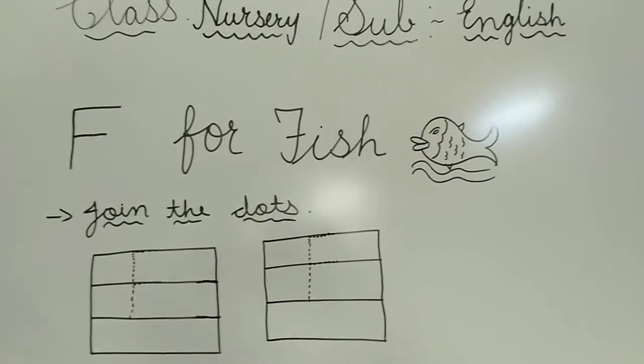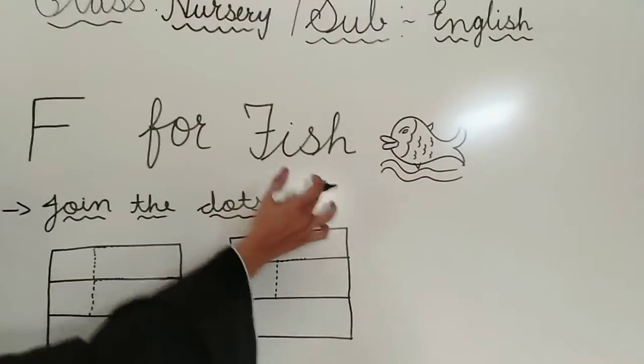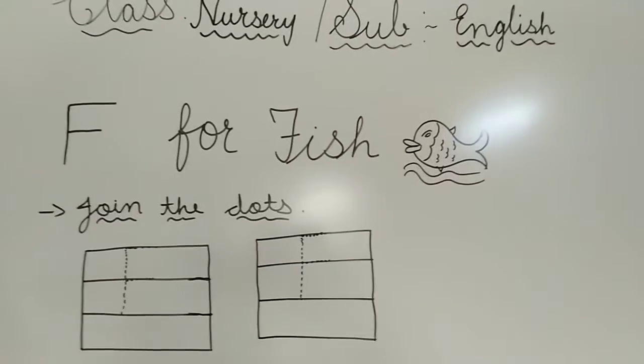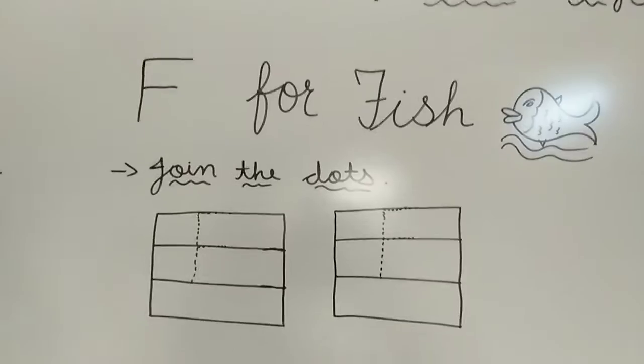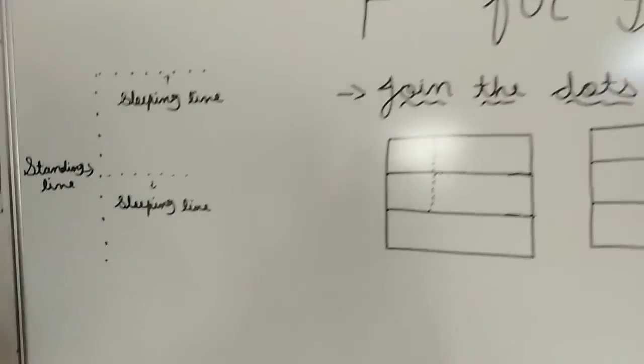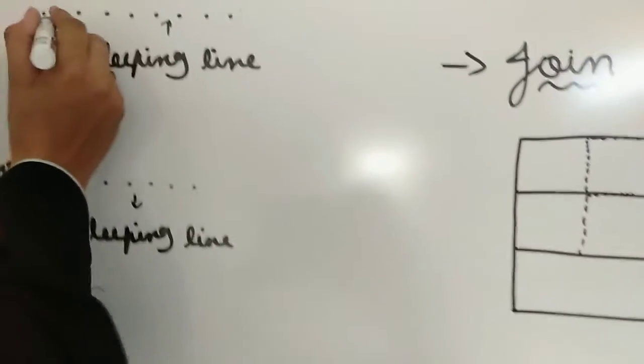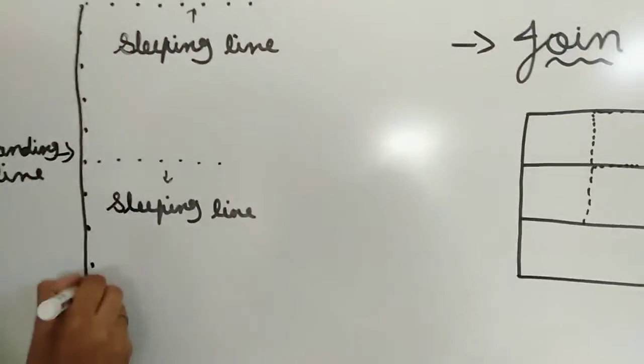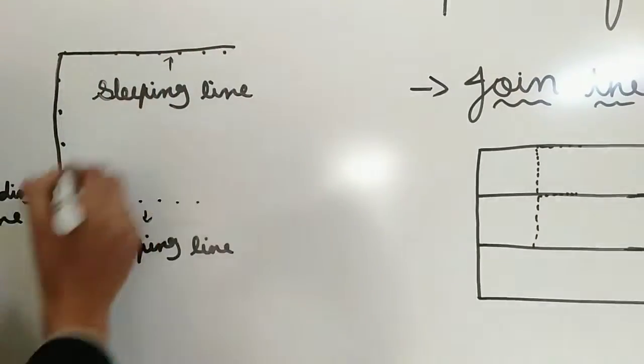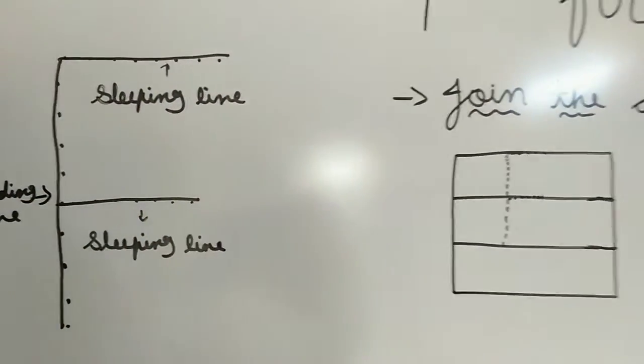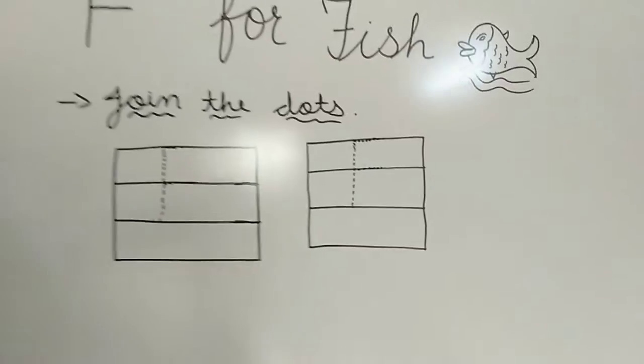English mein F for fish. Aaj hum English mein F for fish denge. How to write F? F likhen ke liye first standing line, sleeping line, sleeping line. F for fish.